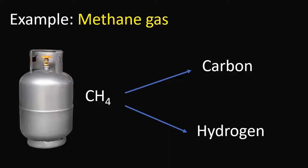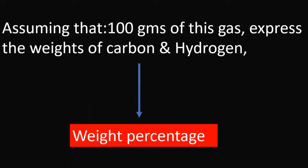For example, methane gas is taken. It is composed of two elements: carbon and hydrogen. Assuming that 100 grams of methane gas is taken, we express the weights of carbon and hydrogen — those are called percentage composition or weight percentages.